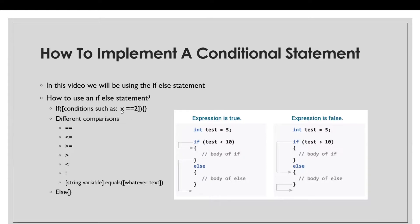For example, if X were to equal-equal a value, it would run a block of code inside the if statement. To compare a variable equal to a value, you must put two equal signs. If you wanted to say X is less than or equal to two, you put the less than sign and then the equal sign next to it. And if you want X to be greater than or equal to two, you put the greater than and then the equal sign. If you want X to be greater than two, you put the greater than sign, or if less than two, you put the less than sign.